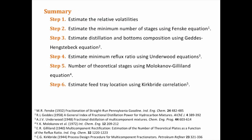In summary, the steps to design a distillation column using shortcut calculations are as follows. Step 1: Estimate the relative volatilities by determining the bubble point or the dew point. Step 2: Estimate the minimum number of stages using Fenske equation. Step 3: Estimate the distillation and bottom composition using Geddes-Hengestebeck equation. Step 4: Estimate the minimum reflux ratio using Underwood equations. Step 5: Find the number of theoretical stages using the Molokanov-Gilliland equation. Step 6: Estimate the feed tray location using the Kirkbride correlation.